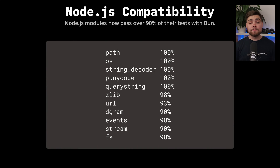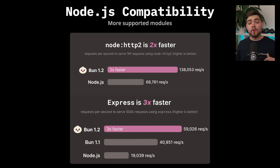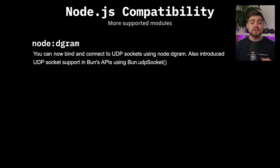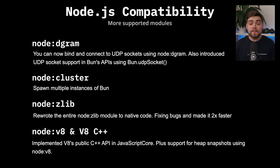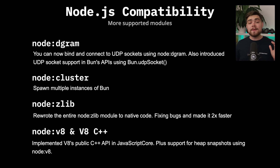Node.js compatibility has been greatly improved in BUN 1.2. They now run the full Node.js test suite on all builds with 90% of tests currently passing. This update adds HTTP2 support, which makes Express run three times faster than on Node.js. They've also added dgram for UDP socket support, cluster for multi-core processing, Zlib with two times faster compression, and V8 modules. They even implemented V8 C++ APIs in JavaScript core to support legacy native modules, meaning many more npm packages that use native add-ons will now just work in BUN without special configuration.